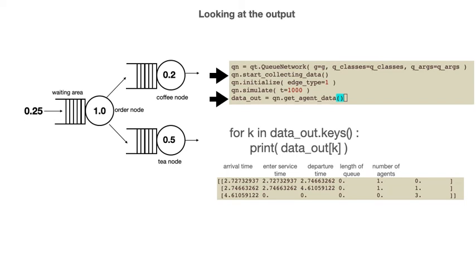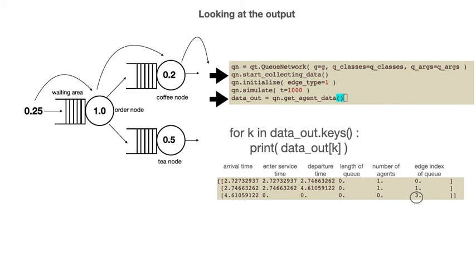For this particular dataset, the agent first joined the queue to give their order to the teller. The times in that row are the arrival time, the time they started giving their order, and the time they finished ordering. This particular agent ordered a coffee, and thus joined the queue with edge index 1 after ordering. The time at which they joined the coffee queue is the same as the time they finished ordering, and some further time elapsed between joining that queue and receiving their drink. Once done being served, agents appear to join a further queue representing them rejoining the rest of the world with their coffee.